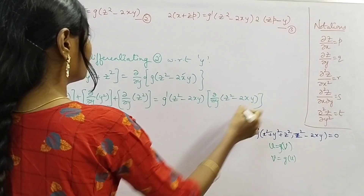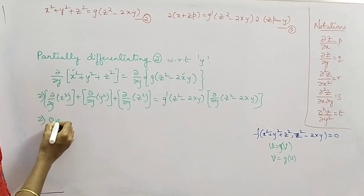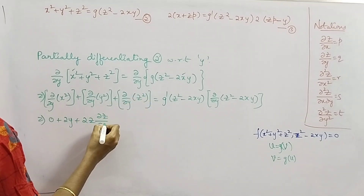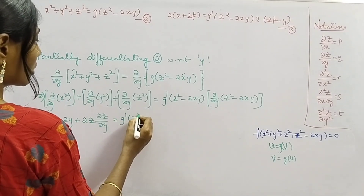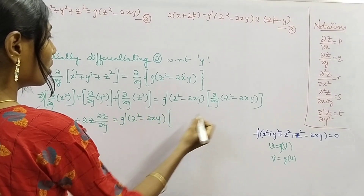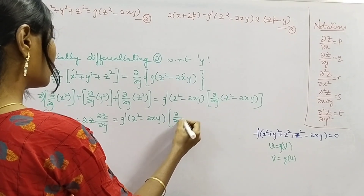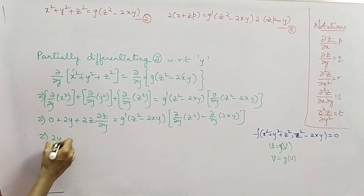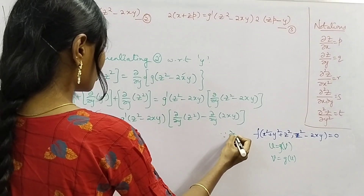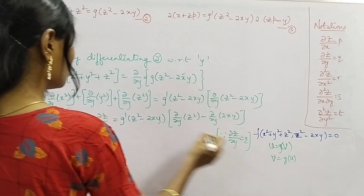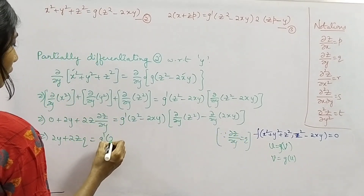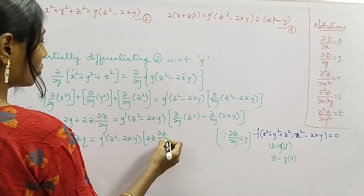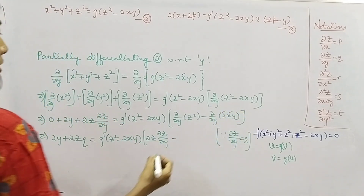Since we differentiate with respect to y, x is treated as constant. The partial derivative of x² with respect to y is 0, the partial derivative of y² with respect to y is 2y, and the partial derivative of z² with respect to y is 2z · ∂z/∂y. The right-hand side inner derivative is ∂/∂y(z²) − ∂/∂y(2xy), where 2 and x are constants so we get 2x · ∂y/∂y.